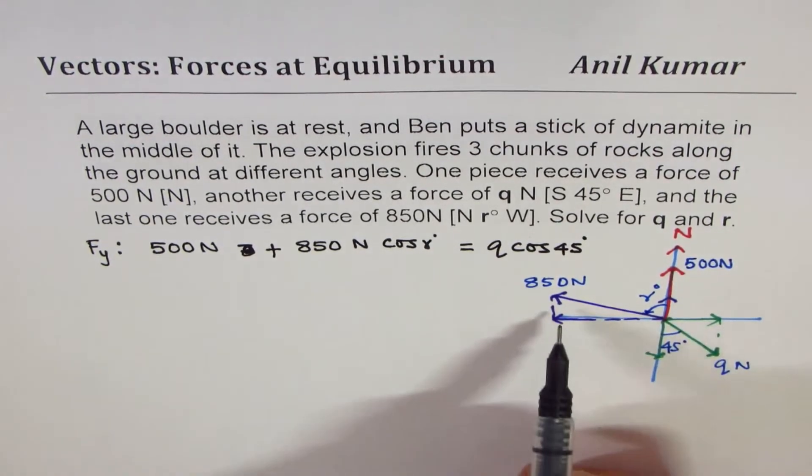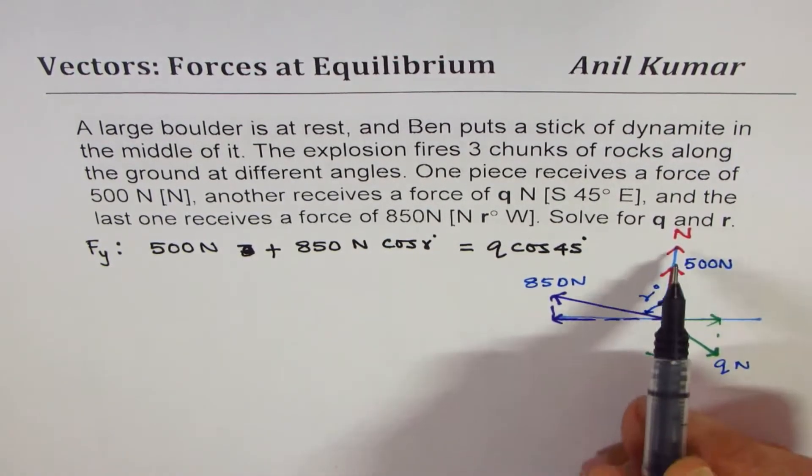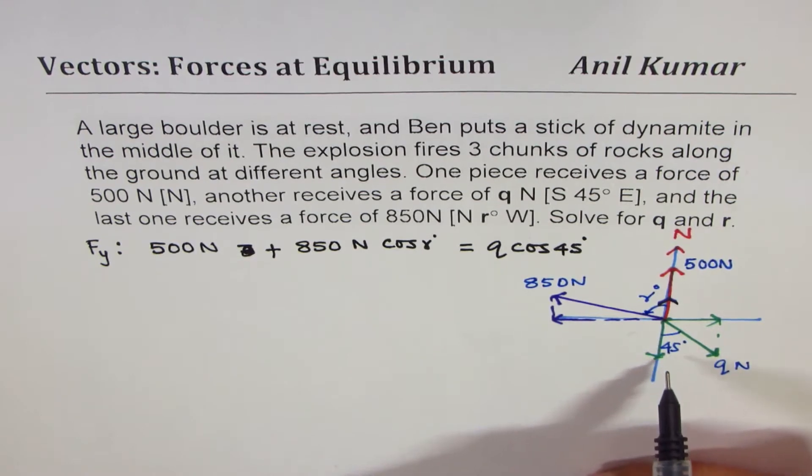Now, that should be equal to the downward q of cos 45, q of cos 45 degrees. So, I hope that is clear. These two forces are acting upwards. This is the only force acting downwards.